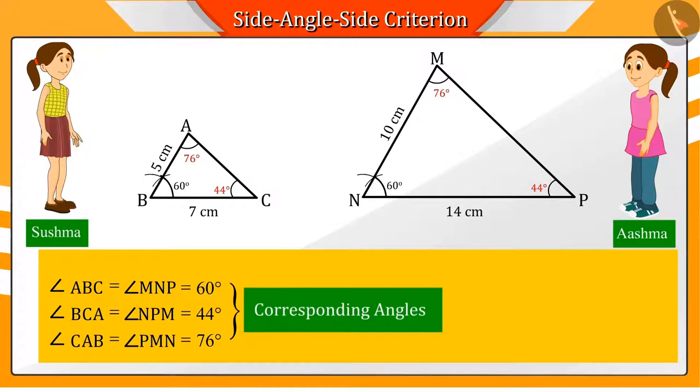Then Ashma says that according to the AAA criteria, the triangles ABC and MNP are similar to each other.